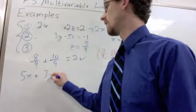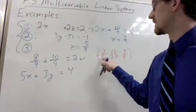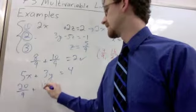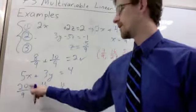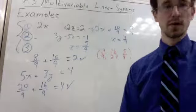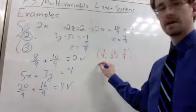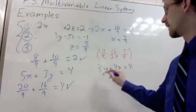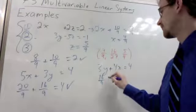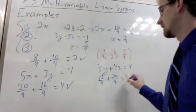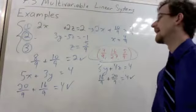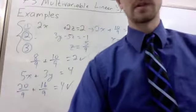Our original second equation was 5x plus 3y equals 4. We plug those in. 5x gets us 20 over 9 plus 3 times 16 twenty-sevenths gets us 16 over 9. 20 plus 16 is 36. 36 divided by 9 is 4. And our original third equation was 3y plus 4z equals 4. And we can plug into this equation. 3y is 16 over 9 plus 4z, which is 20 over 9. And that is again 36 over 9, which is 4. So our solution checks out. And that ordered triple is the solution of that system of equations.